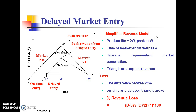In a simplified revenue model, the product life is 2W, with peak revenue at W. This is the market window — with on-time entry, the product life is 2W. For delayed entry, the time of market entry defines a triangle representing market penetration, and triangle area equals revenue loss. The percentage revenue loss equals D × (3W − D) / (2W²) × 100.